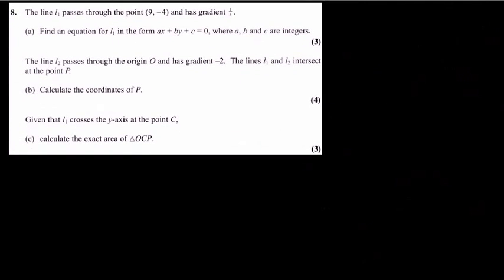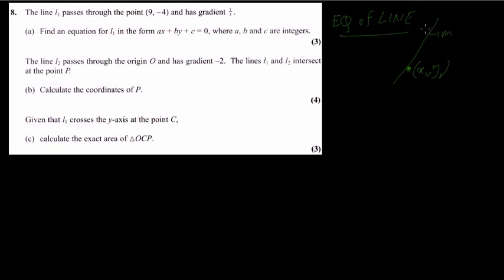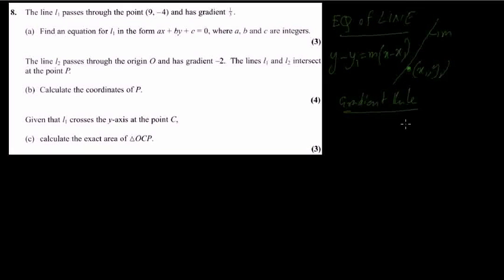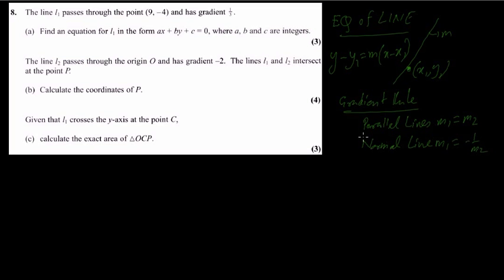This is a coordinate geometry sum. People often have a problem doing coordinate geometry, but remember it is the most straightforward sum. In every coordinate geometry sum, your job is to find the equation of the line. The equation of the line, when you have a point x1, y1 and a gradient m, is: y minus y1 equals to m times x minus x1. The gradient rule: for parallel lines, the gradients are equal; for normal lines, one gradient is the negative reciprocal of the other.